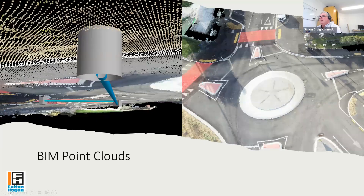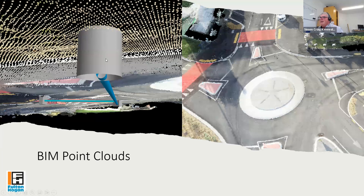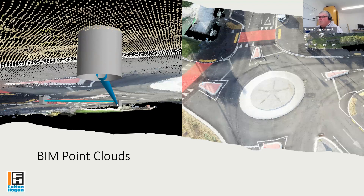Here is a brief example of BIM and point clouds. We flew a drone over the site and the point cloud sits over the BIM model. BIM is great — you can look inside it, crawl down it. Here's a manhole and some sumps going into the model. For down the track, good BIM models let you see all your conflicts.